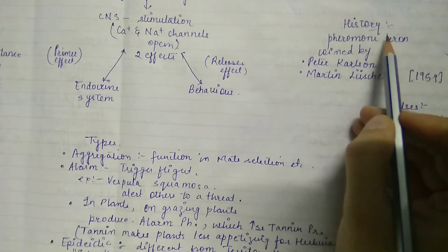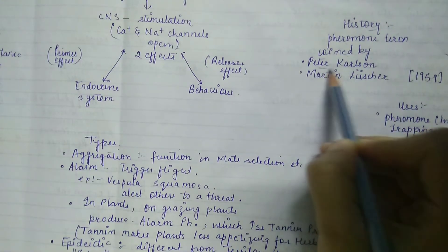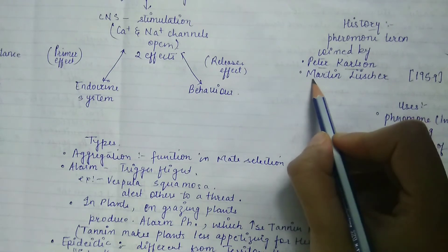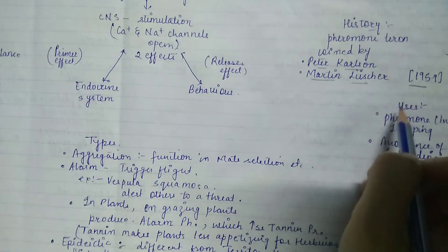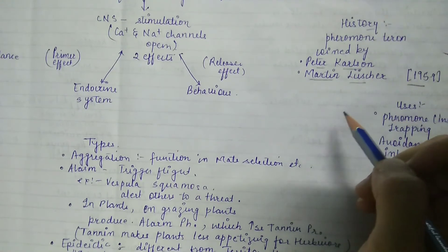Next, seeing the history of pheromones. The pheromone term was coined by Peter Carlson and Martin Luscher. In 1959, they introduced the term pheromones.